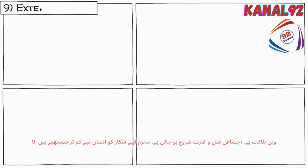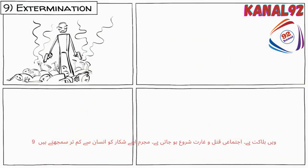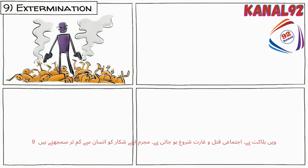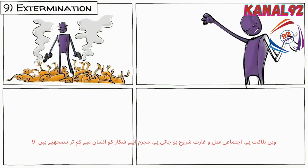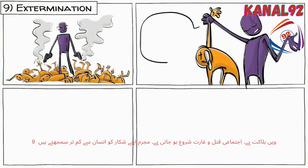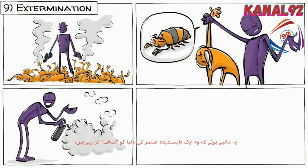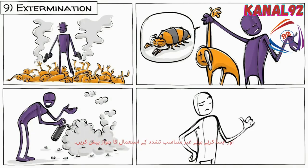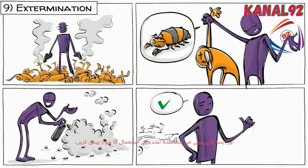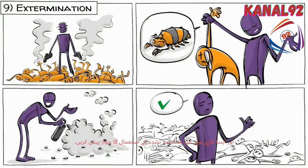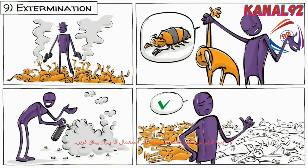Ninth is extermination. The mass killing begins. The culprits view their victims as less than human, believing they are cleansing the world of an undesirable element, and in doing so justify the use of disproportionate violence.